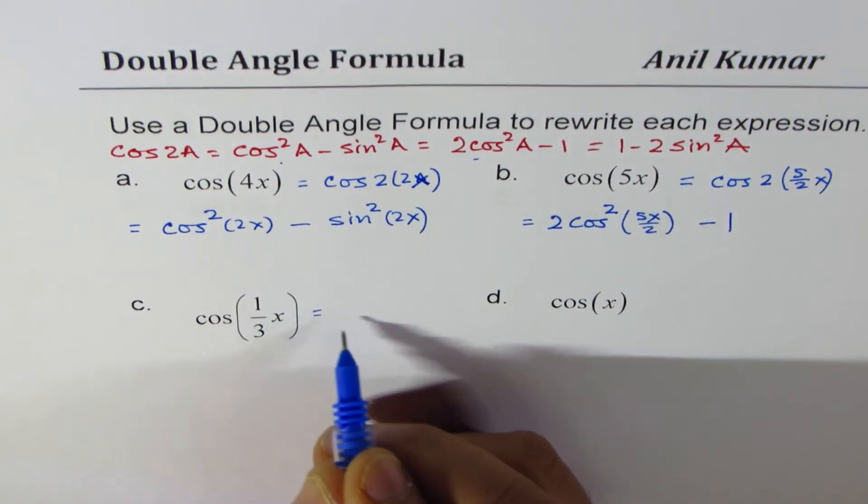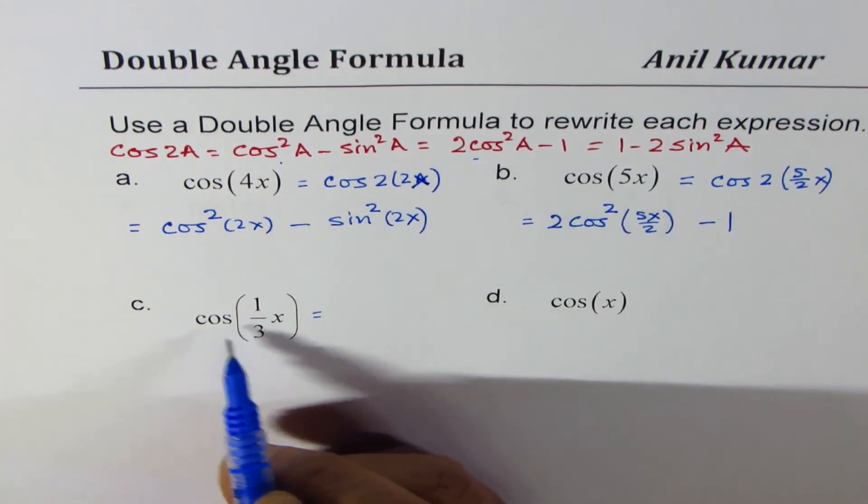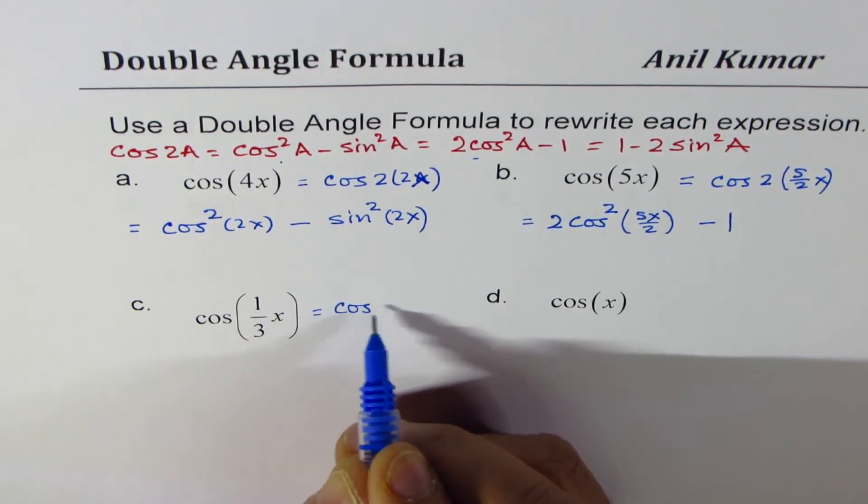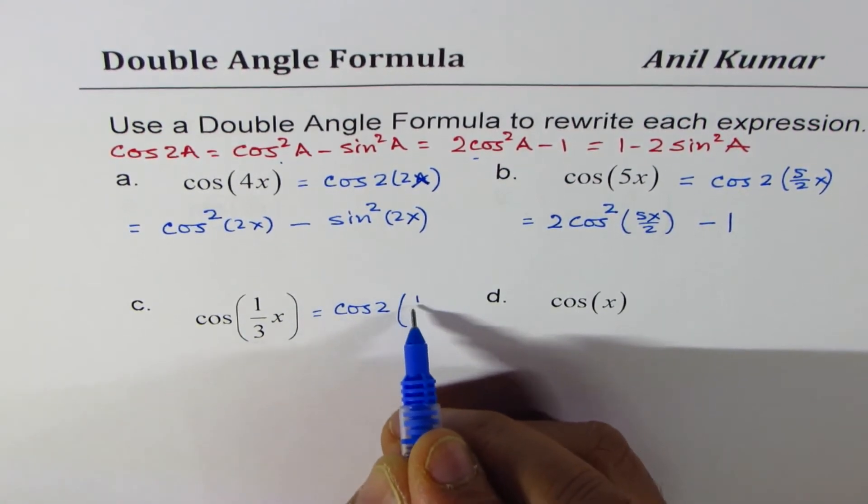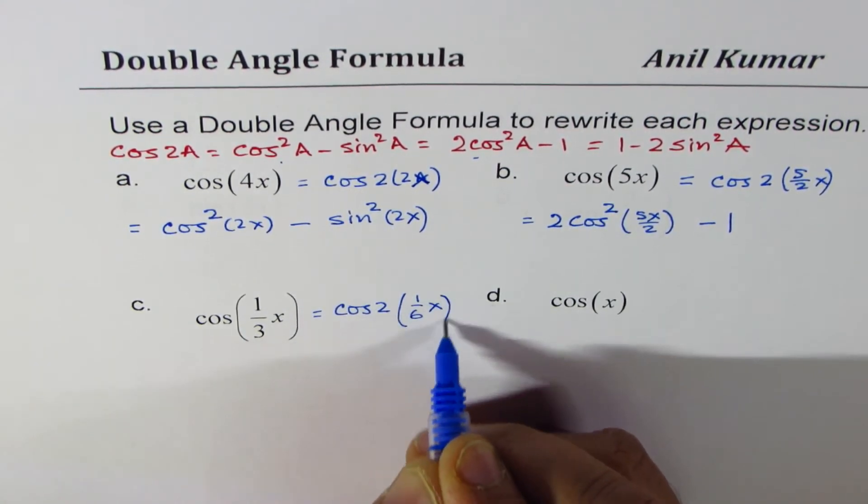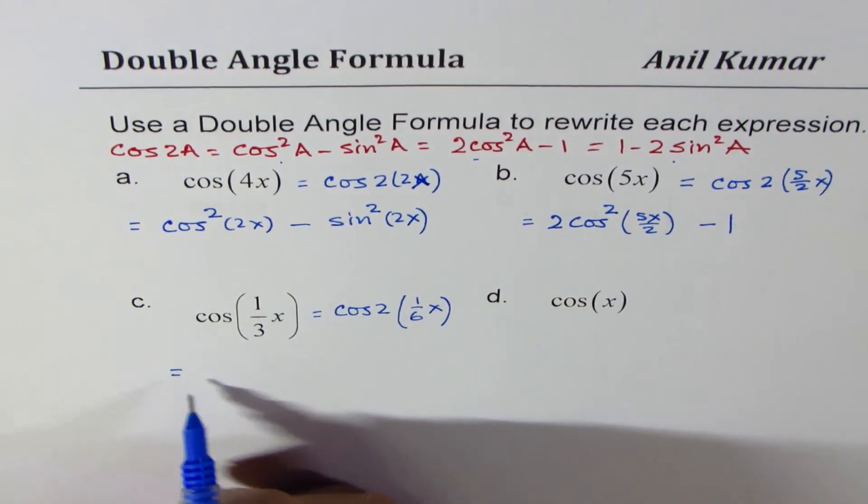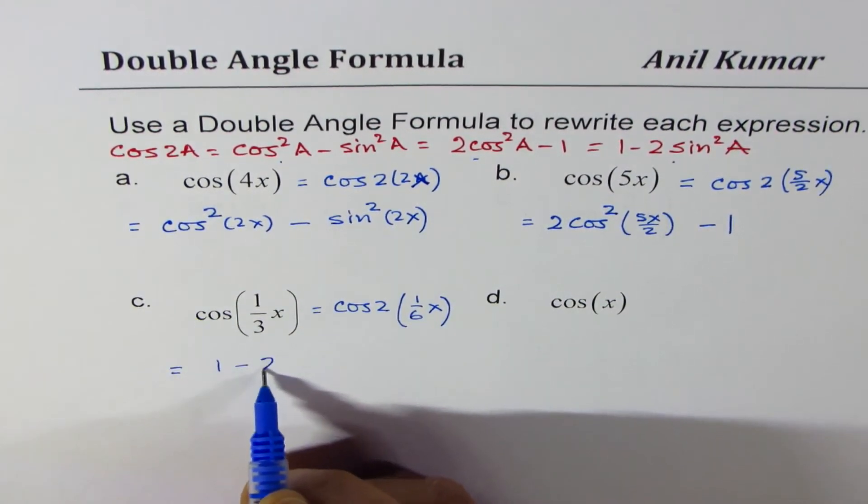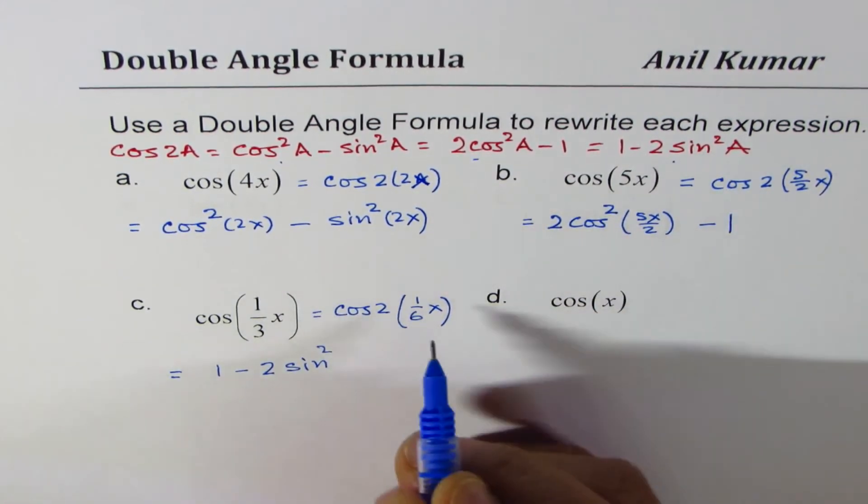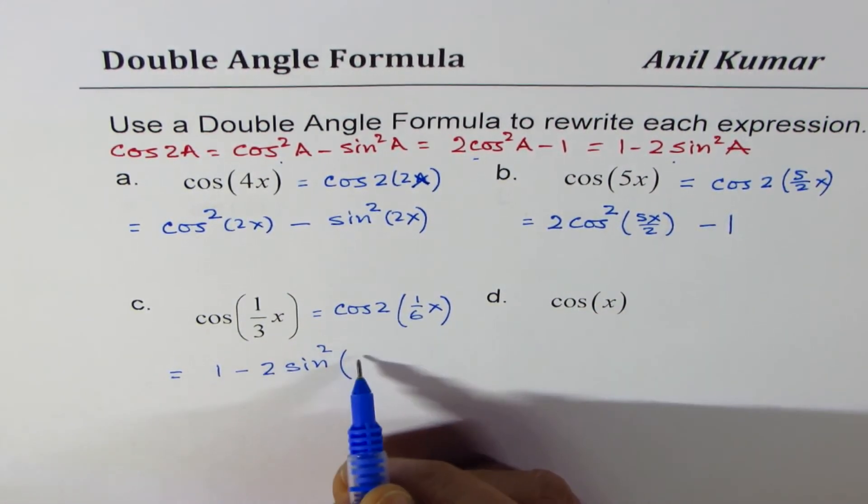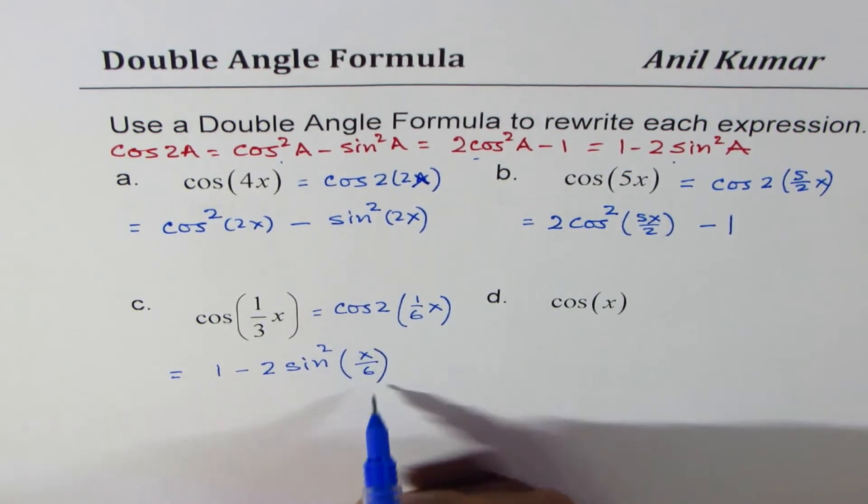Now, in this particular case, if I take 2 common, I get cos of 2, what do I get here? I get 1 over 6x. If I use the third formula, I could write this as 1 minus 2 times sine square x over 6.